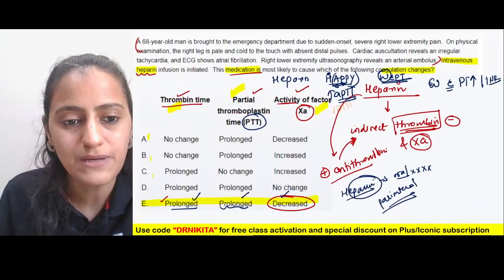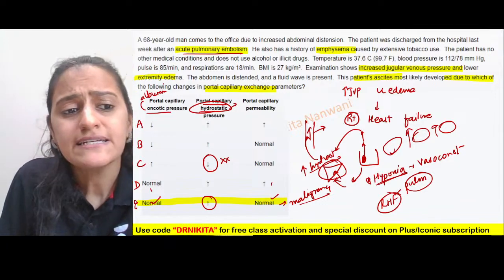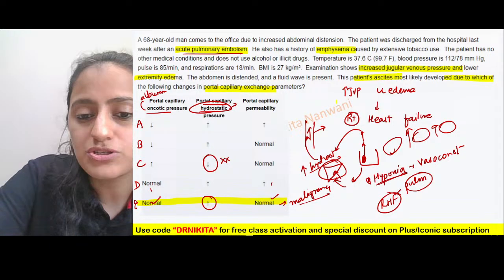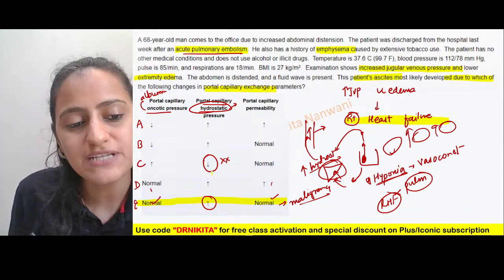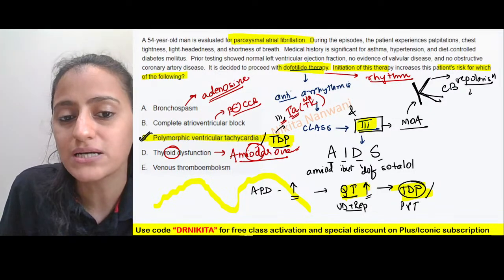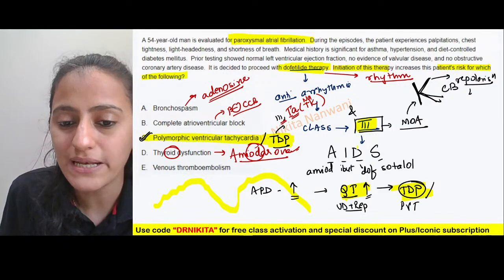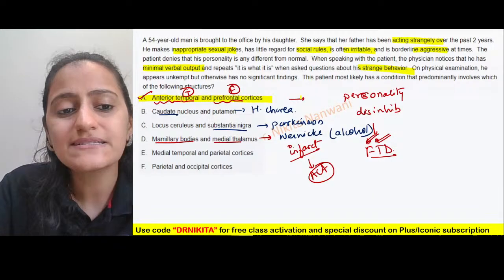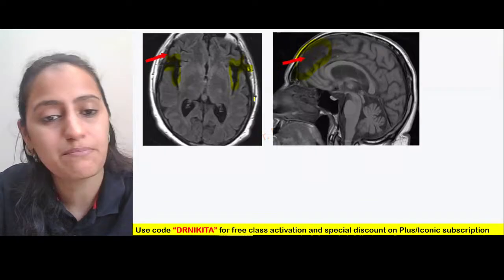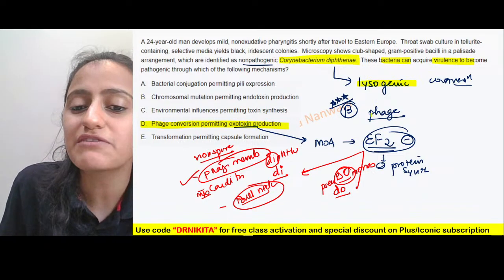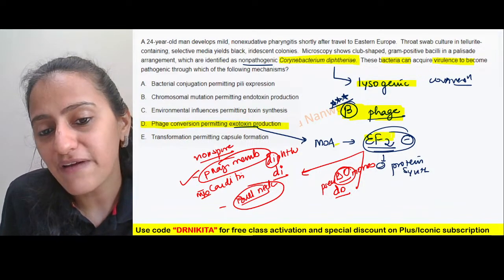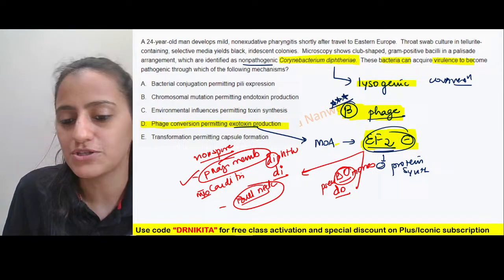Let's quickly revise the five questions we had seen. First: ascites with raised JVP and lower limb edema — think right heart failure — hydrostatic pressure increases, the rest are normal. Second: dofetilide therapy is a class 3 antiarrhythmic drug that predisposes to Torsades de Pointes — class 1A and class 3 inhibit potassium channels. Third: dementia with personality changes and disinhibition is frontotemporal dementia — atrophy of frontal and temporal lobe. Fourth: Corynebacterium diphtheriae acquires virulence via lysogenic beta phage conversion. Mechanism of toxin is EF2 inhibition — elongation factor 2.